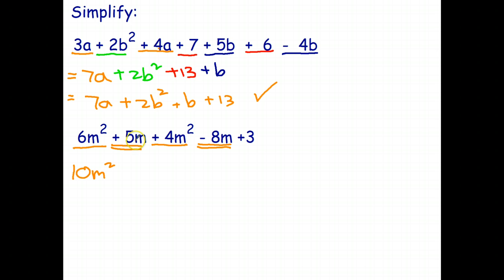So here I have 5m plus 5m minus 8m. Well, 5m subtract 8m, if you want to, change that again to a plus negative. 5m plus negative 8m is plus, 5 plus negative 8 is plus negative 3m. And the only term that's not underlined is the 3.